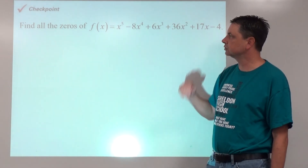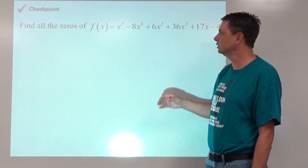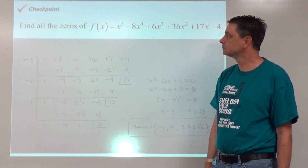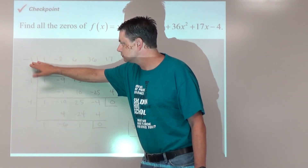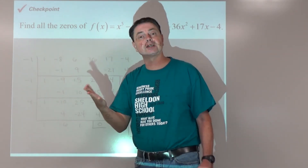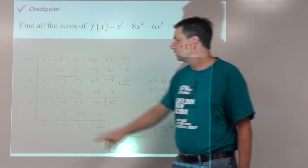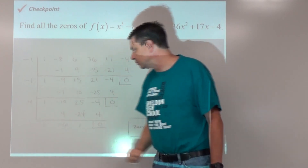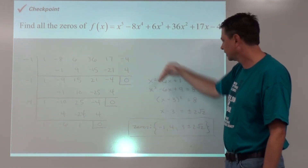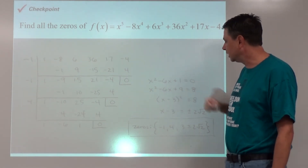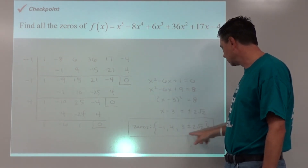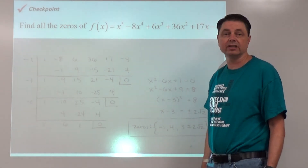Checkpoint: use your technology and the idea of p over q to find all the zeros of the function. Negative one was a zero and occurred twice — divide by negative one twice. The graph shows a bounce at negative one confirming multiplicity. Four is also a zero from the calculator. Dividing all the way down to a quadratic, then completing the square gives the remaining zeros: 3 plus or minus 2 root 2. Final zeros: negative 1, 4, and 3 plus or minus 2 root 2. That's all for today — see you next time.